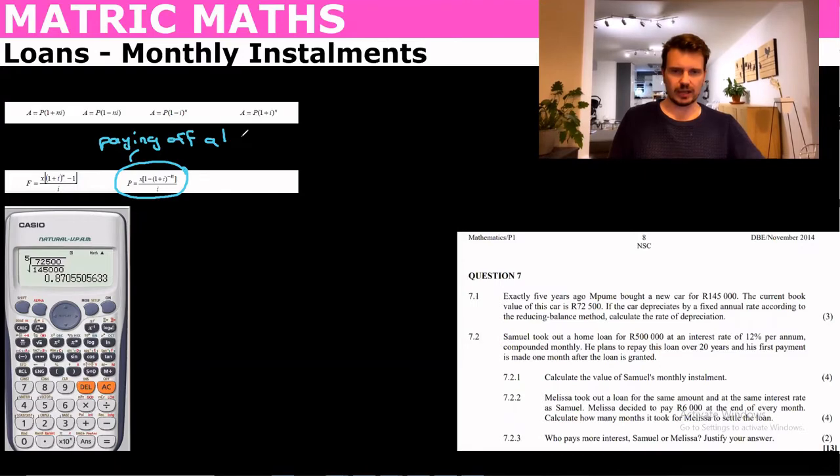Let's look at question 7.2 which says Samuel took out a home loan for $500,000 at an interest rate of 12% per annum compounded monthly. He plans to repay this loan over 20 years and his first repayment is made one month after the loan is granted. Well that makes sense.